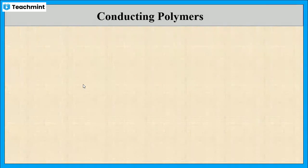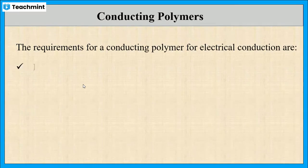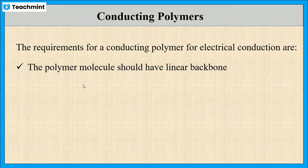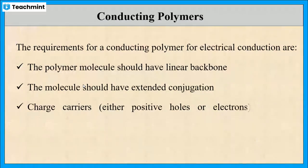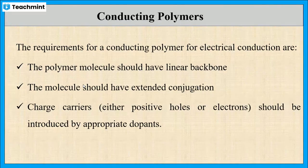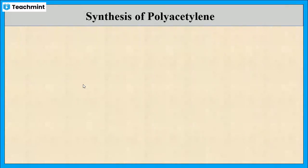Now let us see what are the requirements for a polymer to act as a conducting polymer. The first requirement is that the polymer molecule should have a linear backbone — for example, acetylene, which has a linear backbone. Next, the molecule should have extended conjugation, meaning it may have alternating double bonds. Whenever treated with a dopant, there should be a creation of either positive holes or electrons, in which case the polymer will act as a conducting polymer.